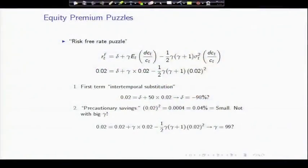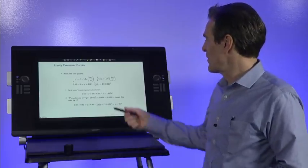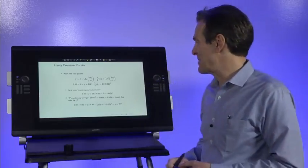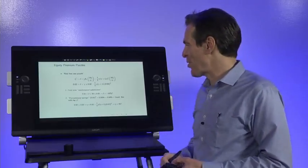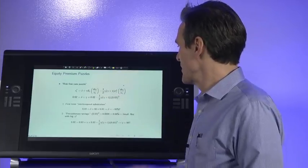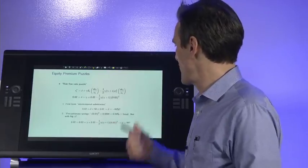That first term represents intertemporal substitution, how interest rates induce people to save and consume later rather than today. And you can see that that would lead us into deep trouble. If we accept a risk aversion coefficient of 50, multiplying it by 2% consumption growth, well, 2% times 50 is a big number and the risk-free rate itself is only 2%. We would have to imagine a delta of negative 98%. People prefer the future to the present by a 98% discount factor.